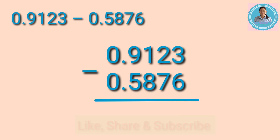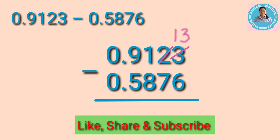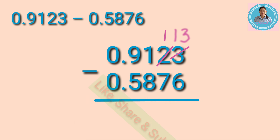To regroup, we will borrow from the next digit to the left. So we'll borrow from 2 — 2 will become 1 and 3 becomes 13 because the number that we borrowed is 10. Subtract now: 13 minus 6 equals 7.